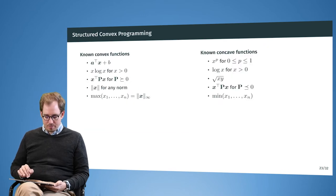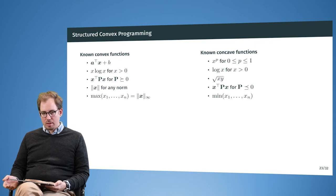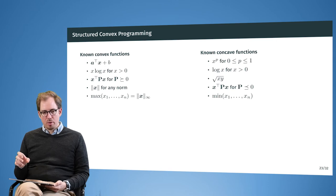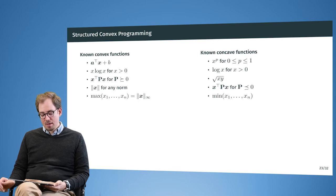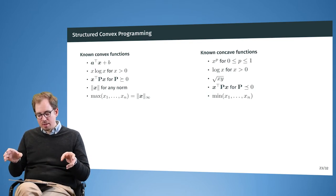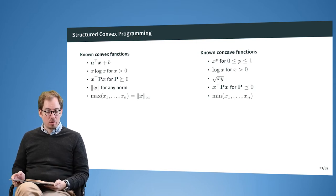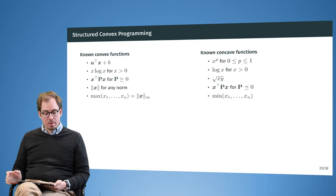If we want to determine whether a function is convex everywhere, checking the conditions at every point is tedious. Instead, there is a way to combine convex functions without losing the property of convexity — like Lego blocks. We can have small known convex building blocks that can be combined, and we know the result will still be a convex function.